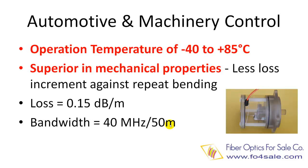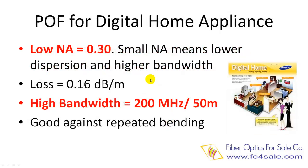POF for digital home appliances needs low fiber loss and high bandwidth for data networking. This fiber has a lower numerical aperture than the previous fibers, and as such it offers much higher bandwidth — 200 MHz per 50 meters compared to 40 MHz per 50 meters.